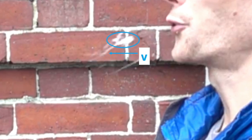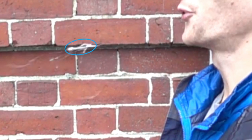In our experiment, the characteristic length of the spit was measured as the vertical diameter and the velocity as the initial velocity from the mouth. With time, the shape of the spit projectile changed shape.